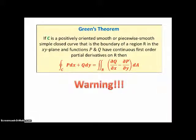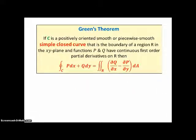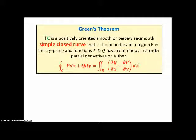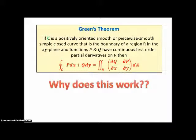Warning! Please notice this only works if it's a simple closed curve. Simple meaning it doesn't cross itself. Closed meaning it completely goes all the way around the region R. So the question is, why does this work?